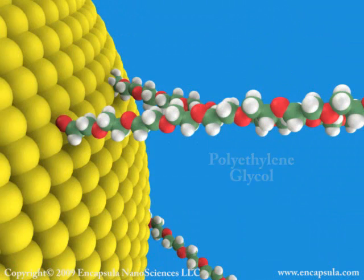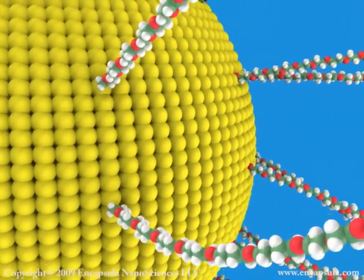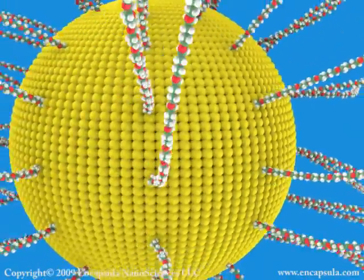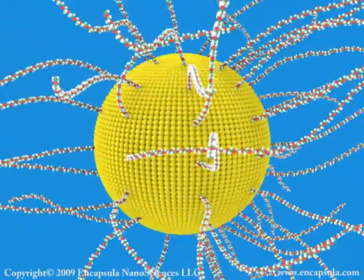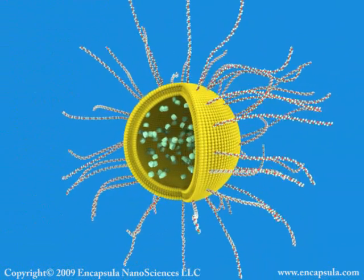The most common surface modification is PEGylation, in which the polymer polyethylene glycol is covalently linked to the surface of the liposome. Small PEGylated liposomes circulate in the bloodstream longer than plain liposomes.